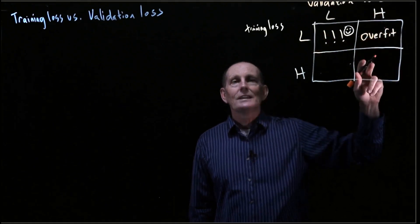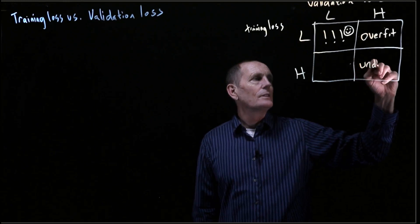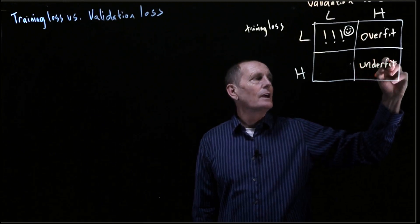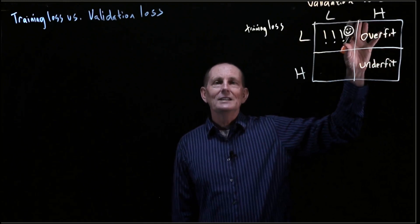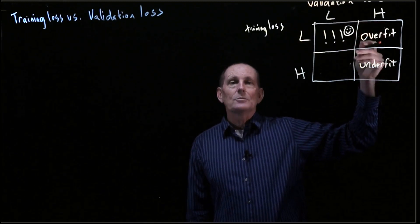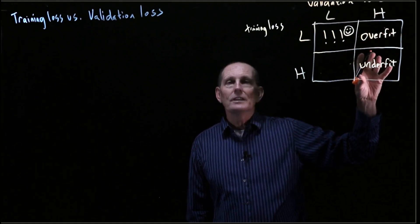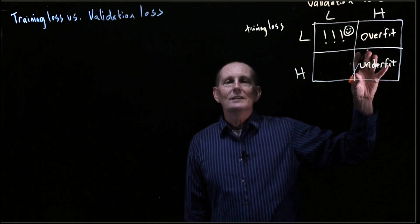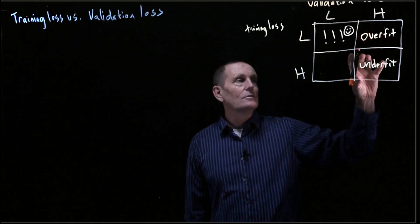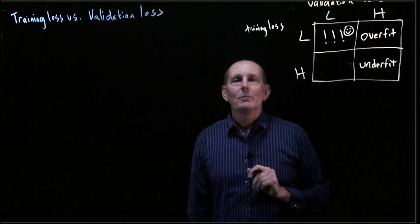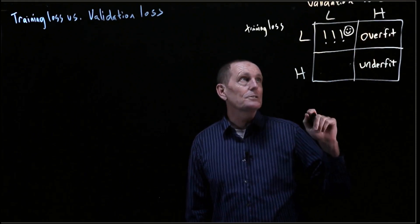If we have both high validation loss and high training loss, that means we're underfitting. For overfitting, we need to regularize, possibly use a simpler model, or add more data. For underfitting, we need a more powerful model or we need to reduce the regularization.